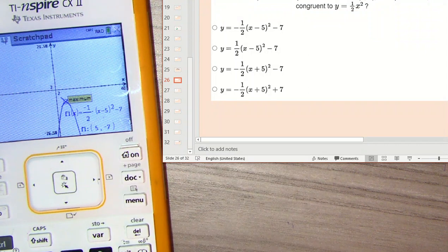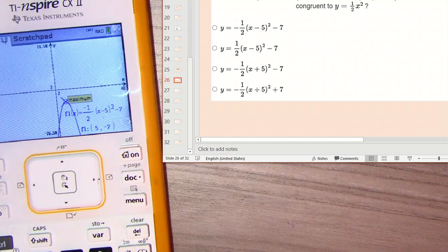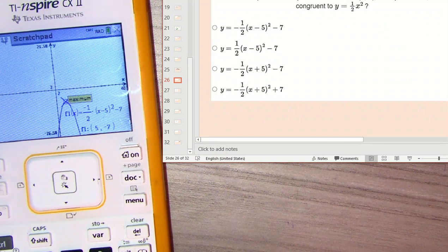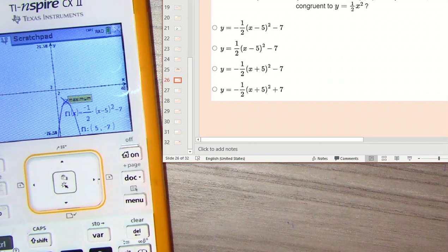It just shows you how wide or narrow this graph is going to be. And as you notice in the answer choices, all of them had that one half. So that was not a tricky part right there. It was more about the H and K.